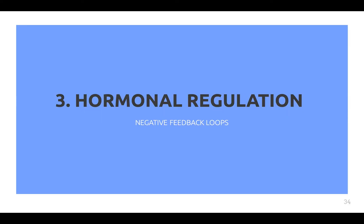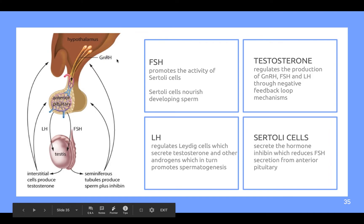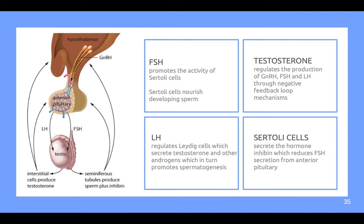Moving on to hormonal regulation of the male reproductive system: hormone feedback mechanisms control the process of sperm production and maintain secondary sexual characteristics. FSH promotes activity of Sertoli cells, which nourish developing sperm. LH regulates interstitial cells, which secrete testosterone and other androgens, in turn promoting spermatogenesis. Testosterone regulates the production of GnRH, FSH, and LH through negative feedback loop mechanisms. Sertoli cells also secrete the hormone inhibin, which reduces FSH secretion from the anterior pituitary.